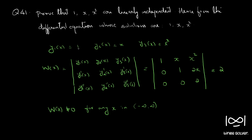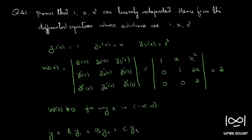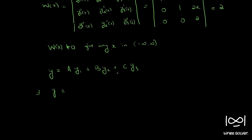Now we need to find the differential equation that has these three independent functions as its solutions. We can write the general solution as y = a·y1 + b·y2 + c·y3, where y1 = 1, y2 = x, and y3 = x². So y = a + bx + cx².